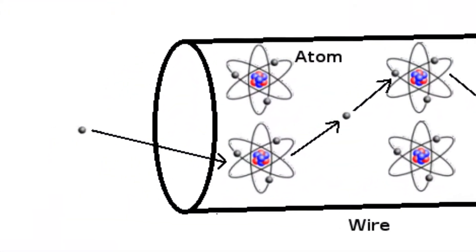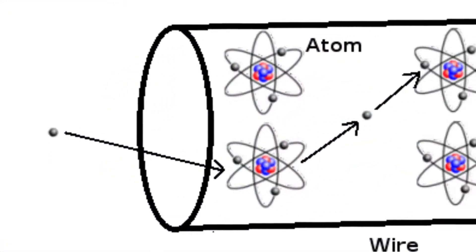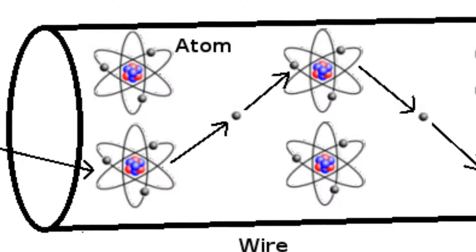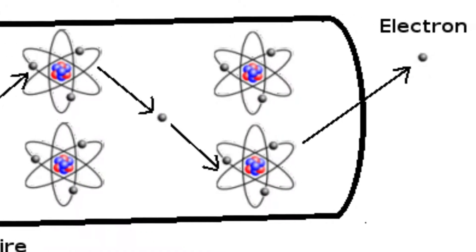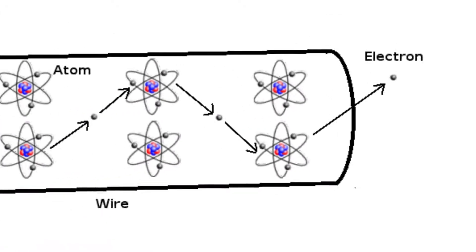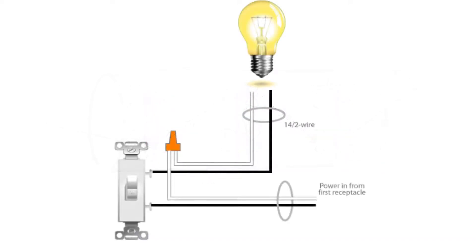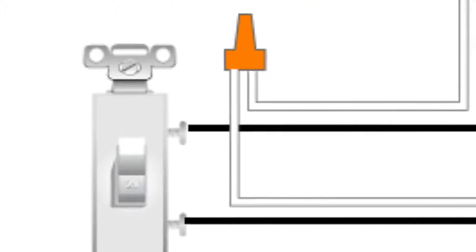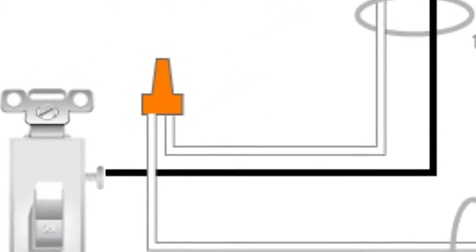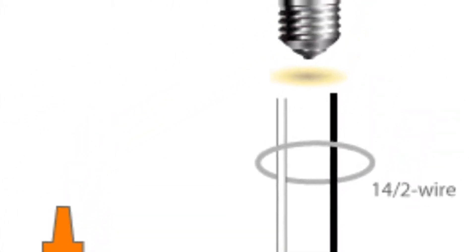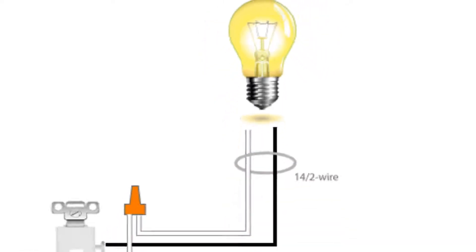Electric current refers to the flow of an electric charge carried by electrons as they jump from atom to atom. Electric current is an easy-to-understand concept. When you turn on a light switch, electric current flows from the switch through the wire to the light, and the room is instantly illuminated.